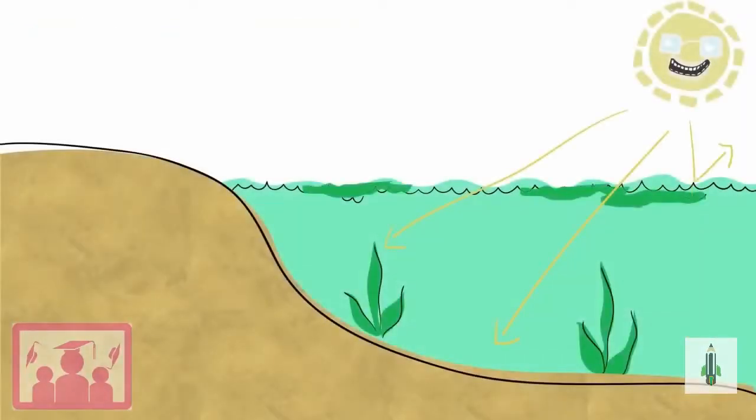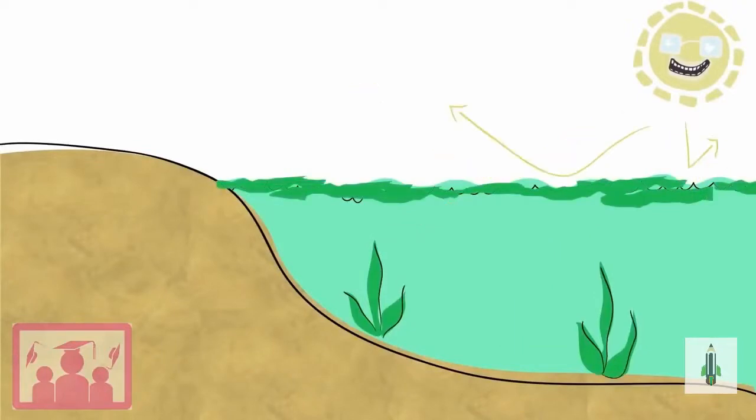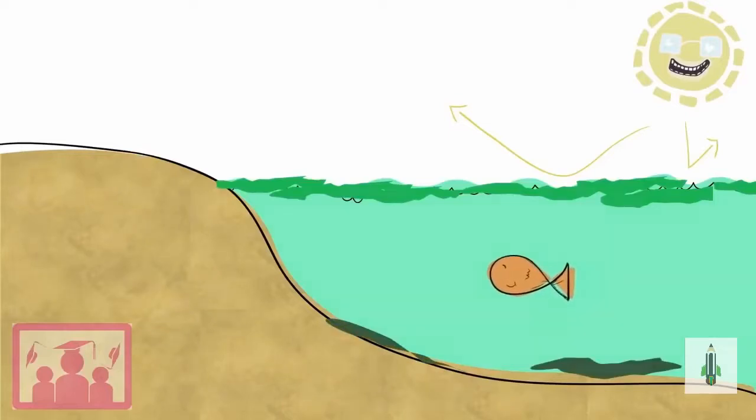This algal bloom absorbs sunlight shining on the water, so the sunlight can't reach the bottom. Plants that need this light for photosynthesis will die. The algae will also start to die when they eat up all the nutrients and run out of food.